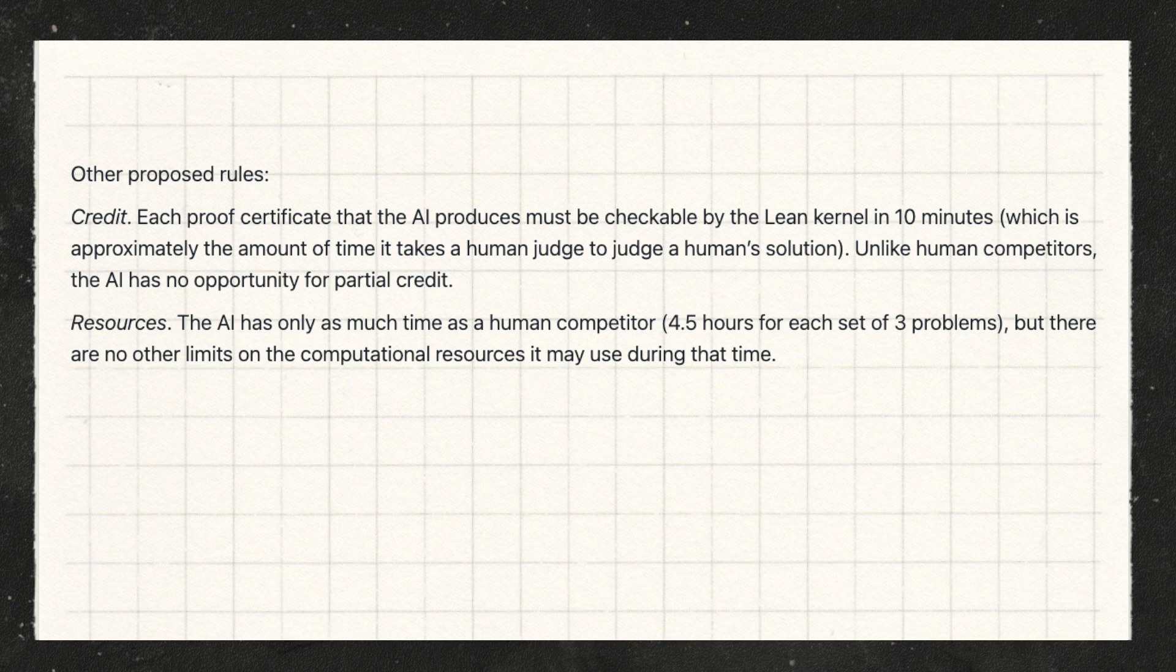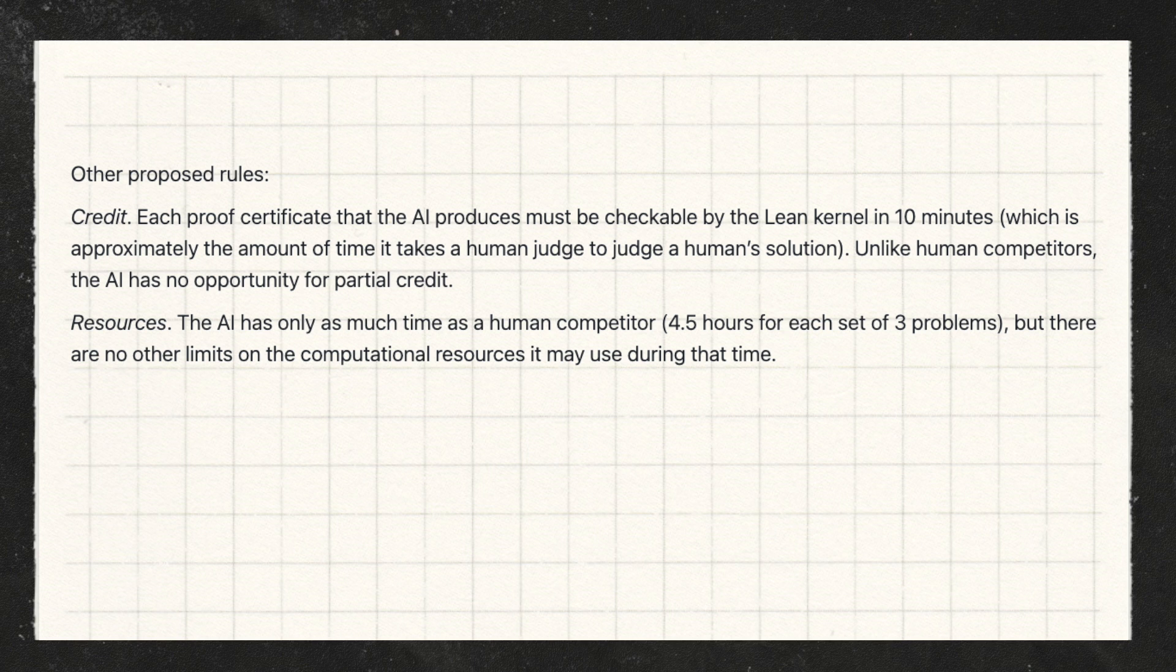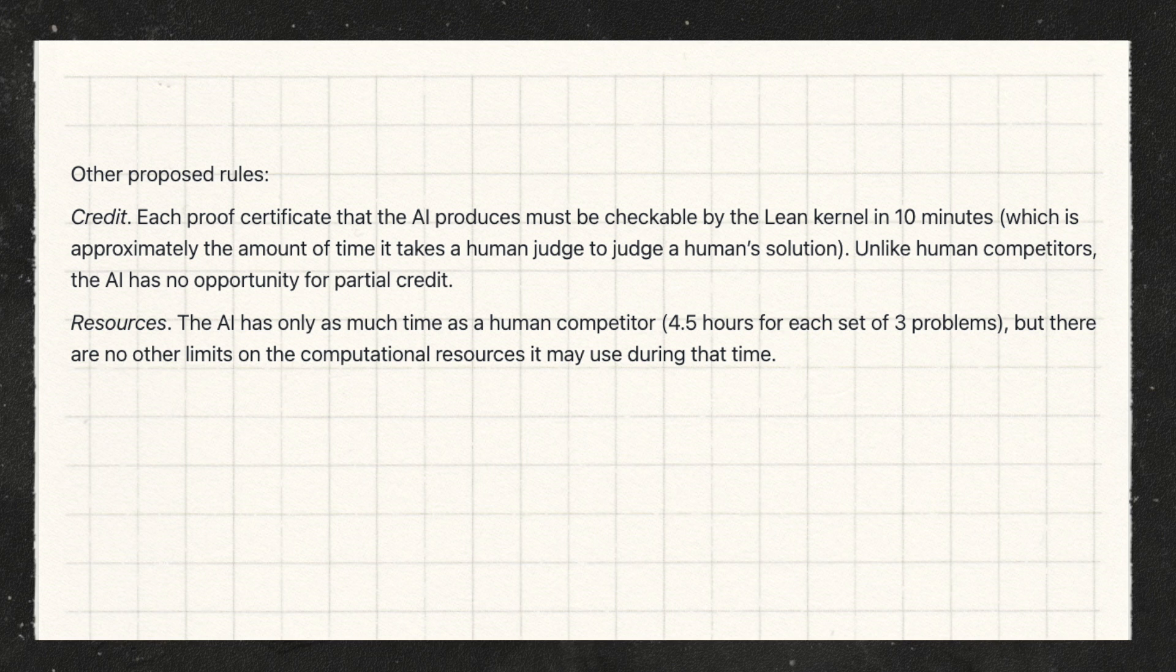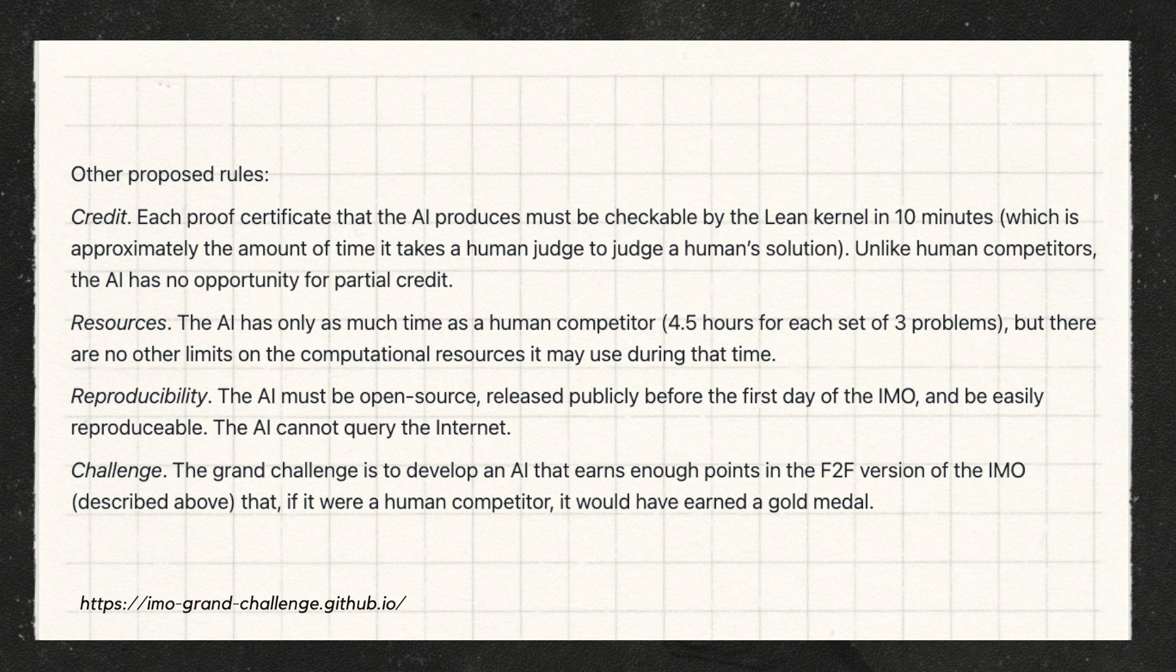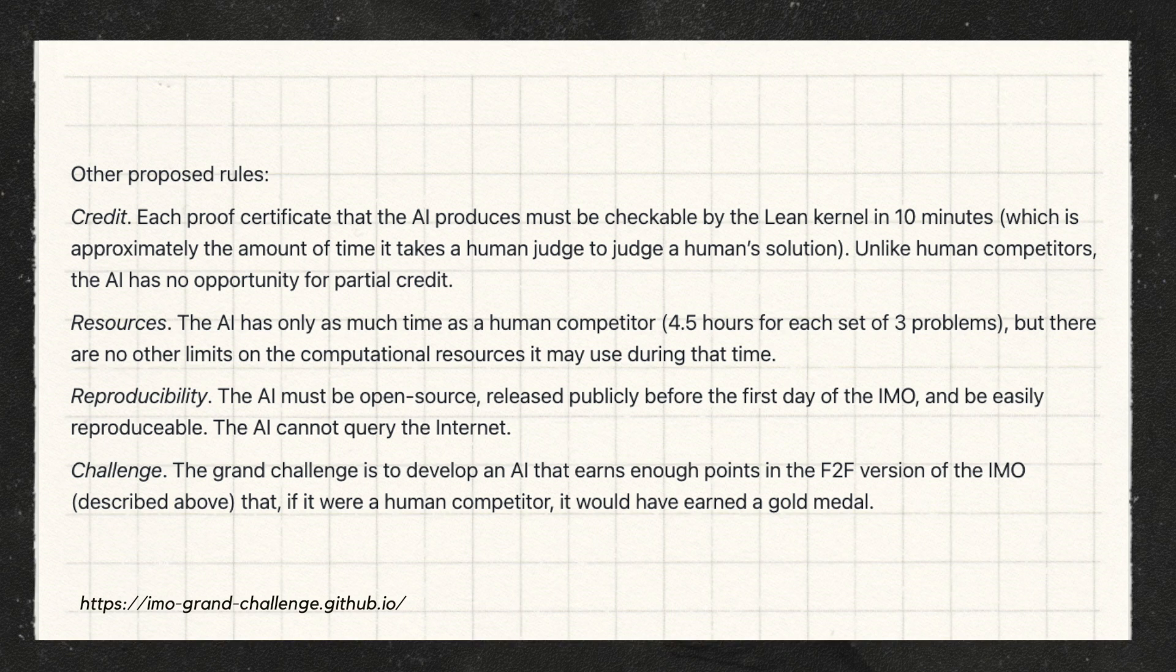The AI only has as much time as a human competitor, which is four and a half hours for each set of three problems. The AI must be open source, released publicly and reproducible, and cannot query the internet.